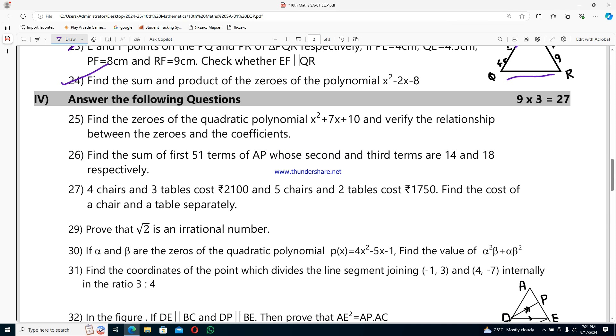Question 24: find the sum and product of the zeros of the polynomial x²-2x-8. Fourth row for 27 marks. Question 25: find the zeros of the quadratic polynomial x²+7x+10 and verify the relationship between the zeros and the coefficients.